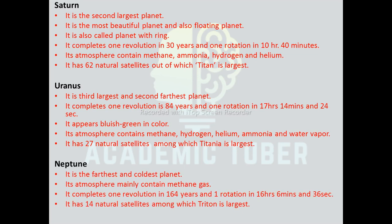Neptune: it is the farthest and coldest planet. Its atmosphere mainly contains methane gas. It accomplishes one revolution in 164 years and one rotation in 16 hours 6 minutes and 46 seconds. It has 14 natural satellites, among which Triton is the largest.